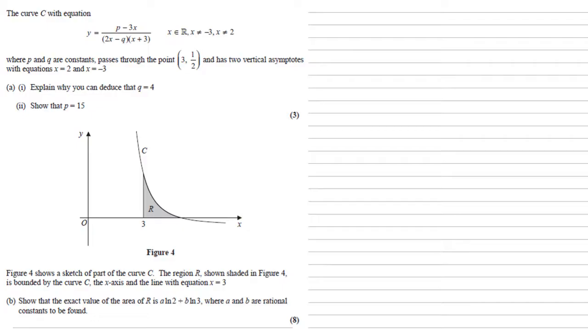Figure 4 shows a sketch of part of the curve C. The region R shown shaded in figure 4 is bounded by the curve C, the x-axis and the line with equation x equals 3. We need to show that the exact value of the area of R is a ln 2 plus b ln 3, where a and b are rational constants to be found. So as we're finding an area under a curve, we're going to be doing some integration. But at the moment, y isn't in a form that's particularly easy to integrate, so we need to do some partial fractions.